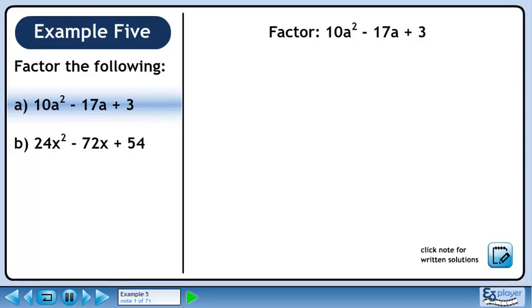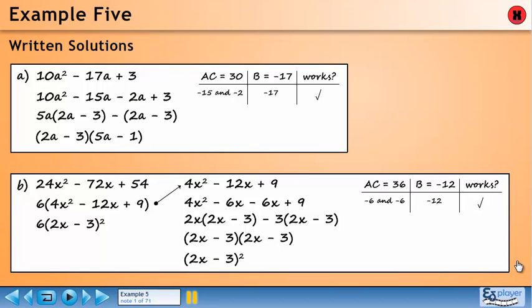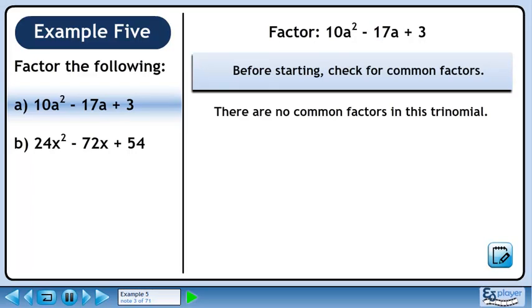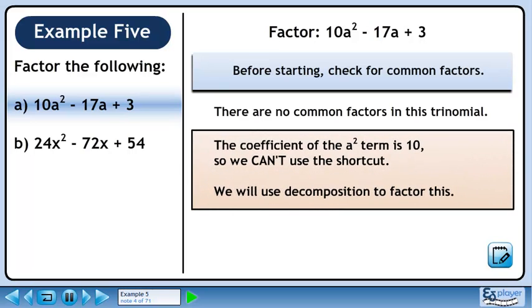In Part A of this example, we will factor 10a squared minus 17a plus 3. Before starting, check for common factors. There are no common factors in this trinomial. The coefficient of the a squared term is 10, so we can't use the shortcut. We will use the decomposition method to factor this.